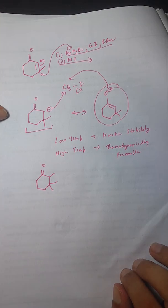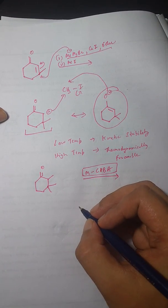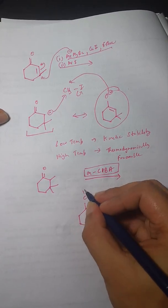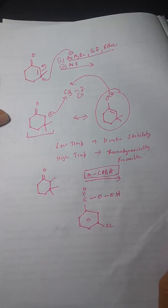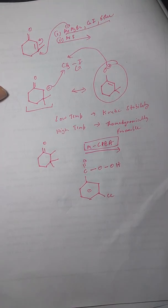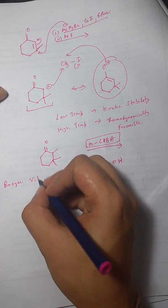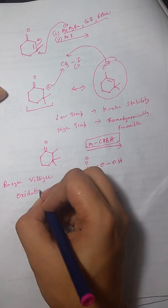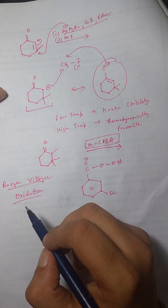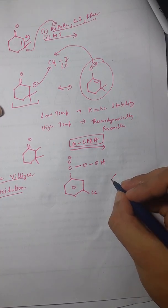Now let's focus on mCPBA — meta-chloroperoxybenzoic acid — which is a peroxy acid. You may have studied the Baeyer-Villiger oxidation: when a ketone is treated with a peroxy acid, we get an ester. If it is a cyclic ketone, we get a lactone — a cyclic ester with a C=O inside the ring.